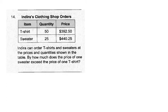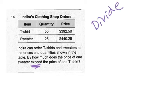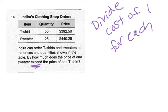You're going to do this one on your own — number 14. It says Indria can order t-shirts and sweaters at prices and quantities shown on the table. How much does the price of one sweater exceed — meaning it's more than — the price of one t-shirt? You're going to have to do division twice to find the cost of one each, and then subtract. Divide to find the cost of one for each, then subtract the smaller price from the larger.